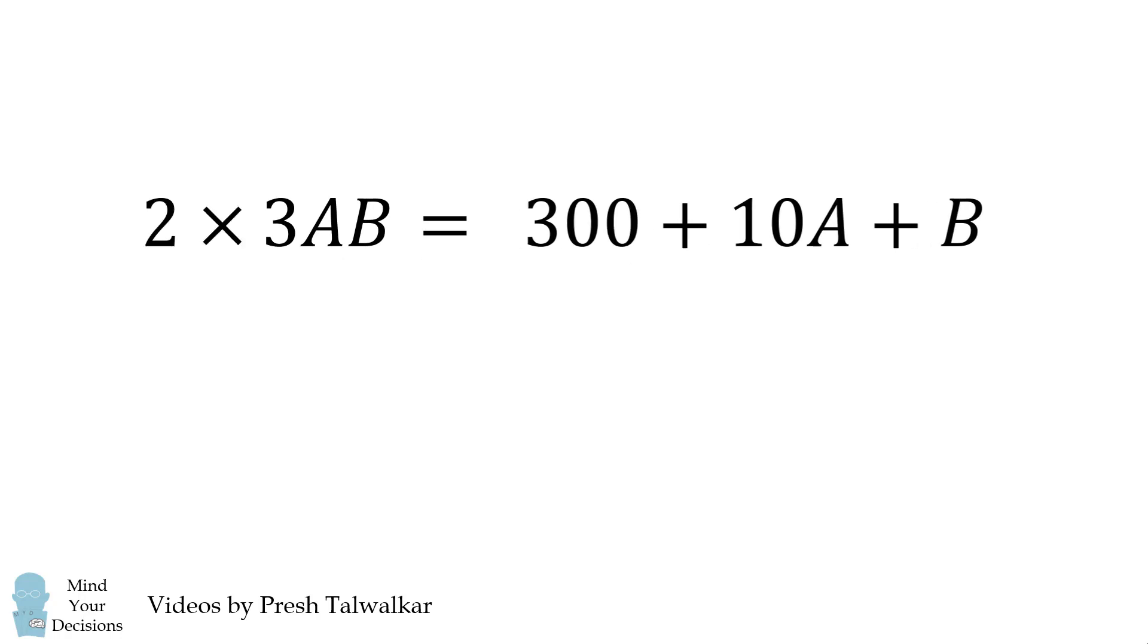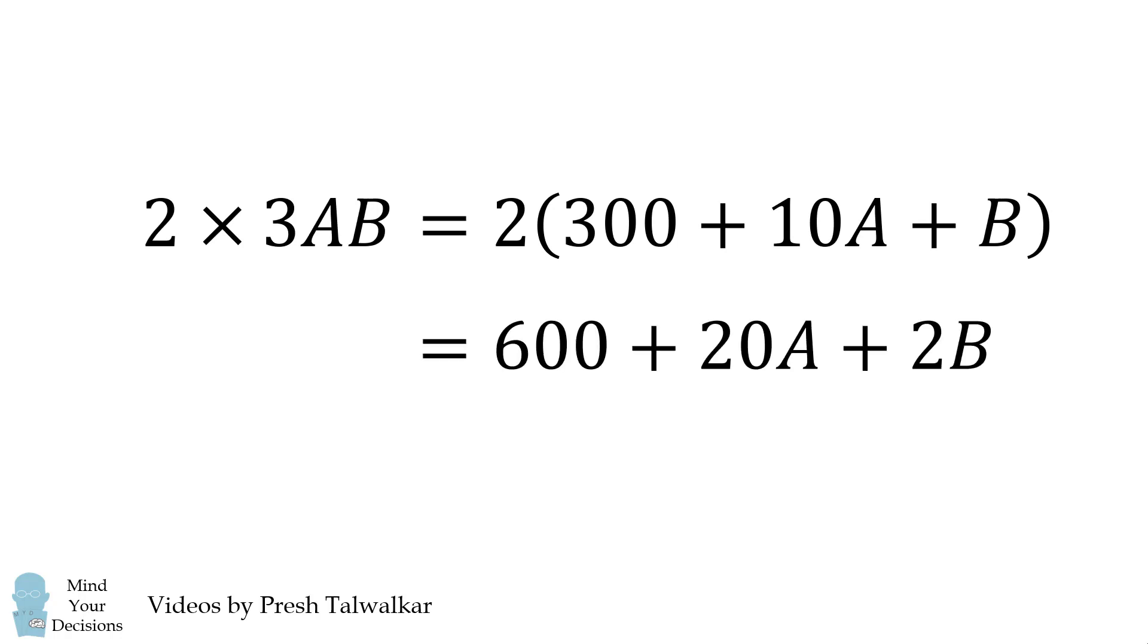We want to double this number, and then we will distribute the 2. It will be equal to 600 plus 20A plus 2B.